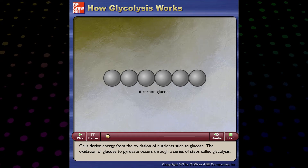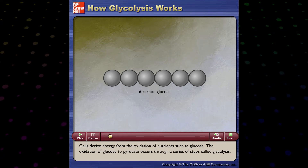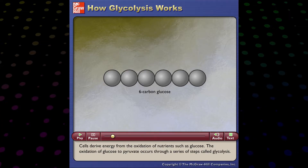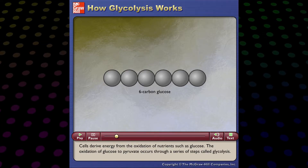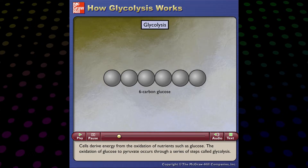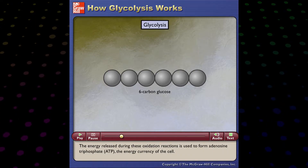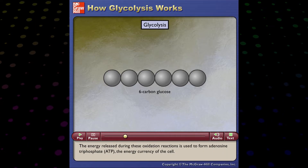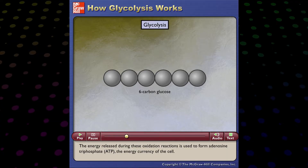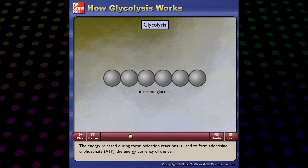Cells derive energy from the oxidation of nutrients such as glucose. The oxidation of glucose to pyruvate occurs through a series of steps called glycolysis. The energy released during these oxidation reactions is used to form adenosine triphosphate, ATP, the energy currency of the cell.